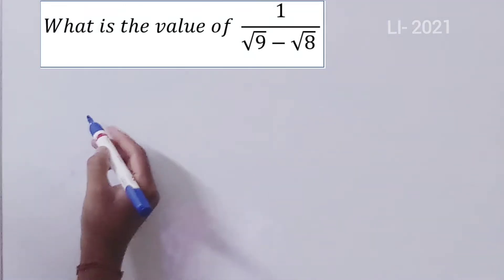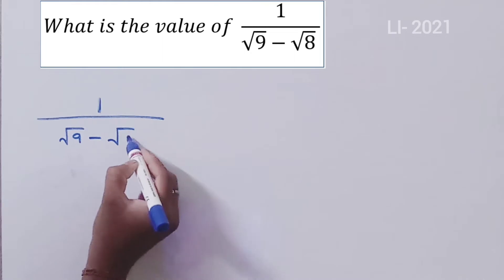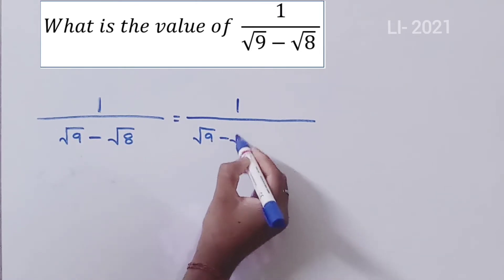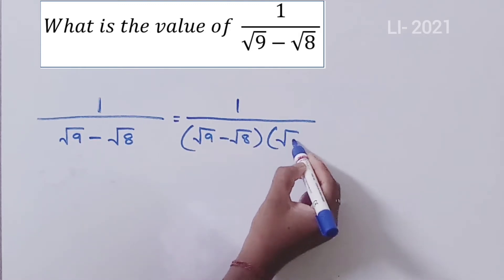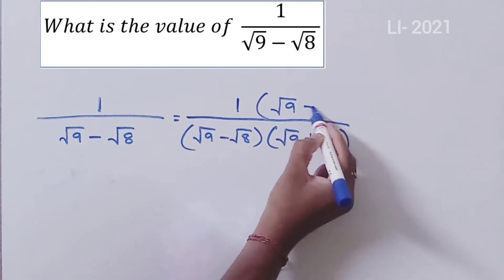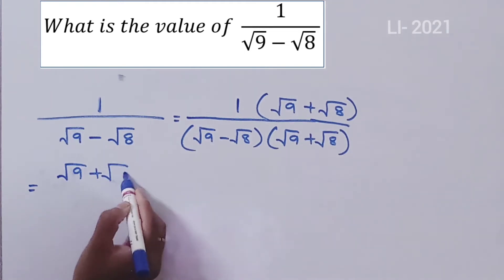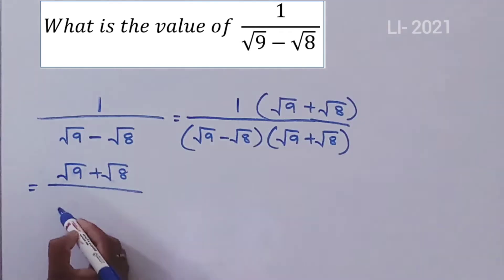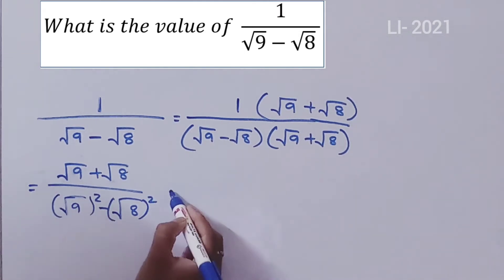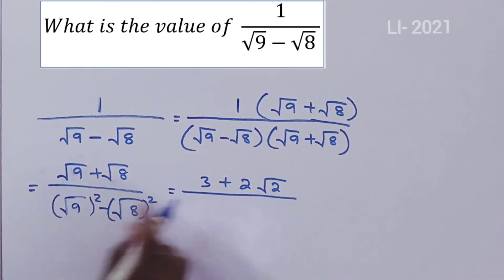What is the value of 1 by root 9 minus root 8? We multiply by the conjugate: 1 by root 9 minus root 8, multiplied by root 9 plus root 8 over root 9 plus root 8. This gives root 9 plus root 8 over (root 9 minus root 8)(root 9 plus root 8), which equals root 9 plus root 8 over (9 minus 8). Since root 9 equals 3, the answer is 3 plus root 2 by root 9.